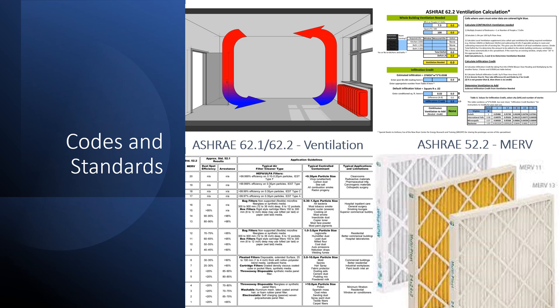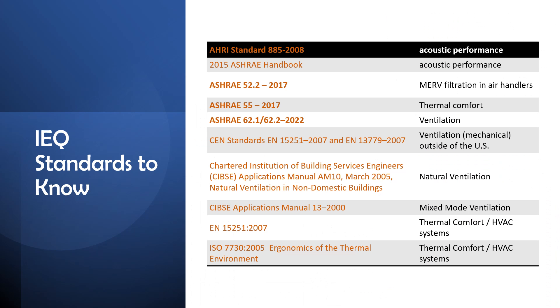Some codes that you absolutely need to know: ASHRAE 62-1 and 62-2 for ventilation. The main difference between 62-1 and 62-2 is that 62-1 is for commercial and institutional buildings, while 62-2 is for residential buildings. ASHRAE 52-2 is a method of testing MERV filters. You also need to add ASHRAE 90 for energy to that list. So, 52-2 is the method of testing MERV filters. ASHRAE 55 is thermal comfort — temperature, humidity, and airspeed. And 62-1 and 62-2 are ventilation.